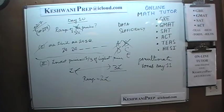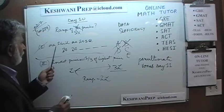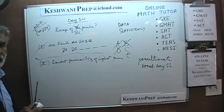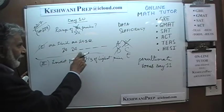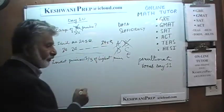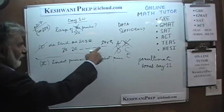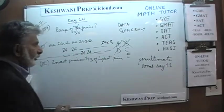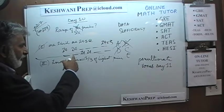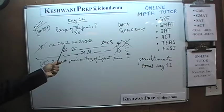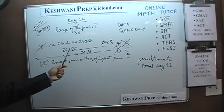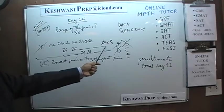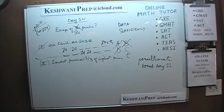If you put the two statements together, it is still not enough. The first statement tells us one third of the price is $24, but we do not know where that $24 falls. If it's the lowest price, we can figure out the range — it would be $48. But if the $24 falls in the middle, we cannot figure out the range. We do not know which of the prices are $24. We cannot figure out the range. The answer is E.